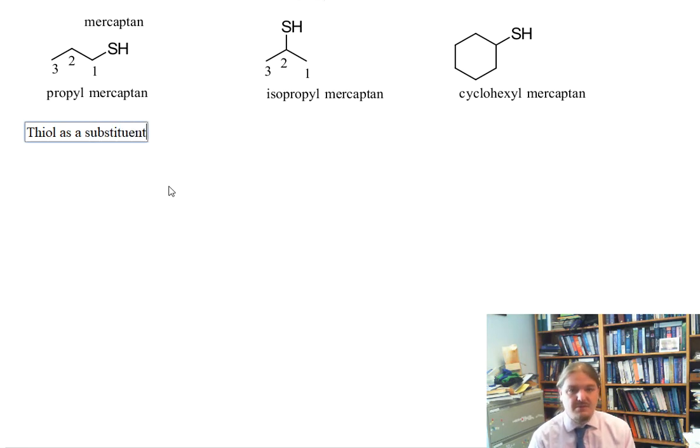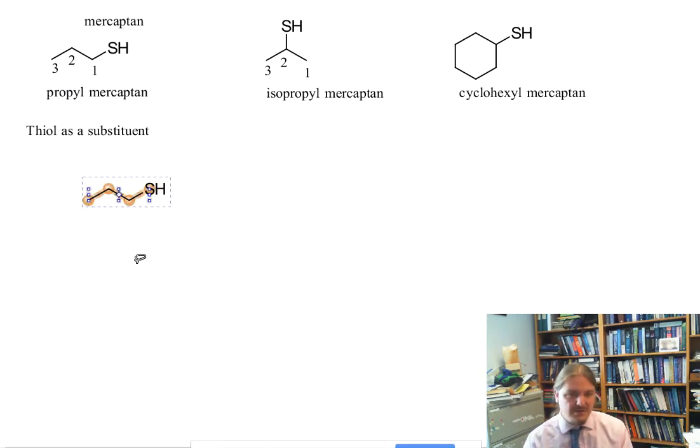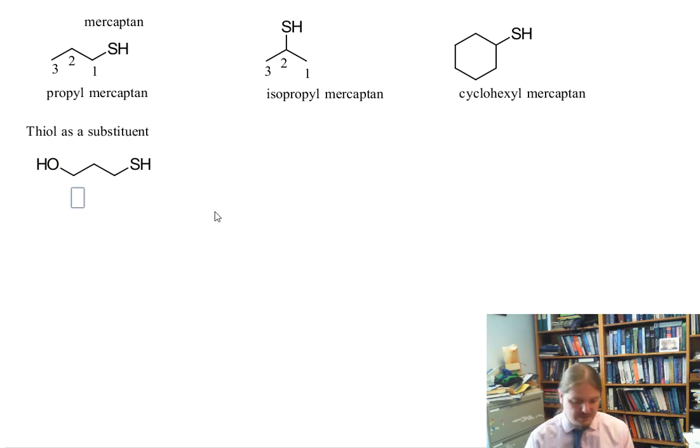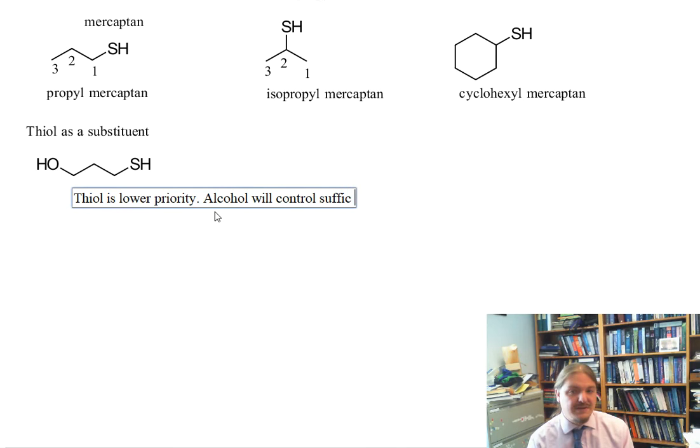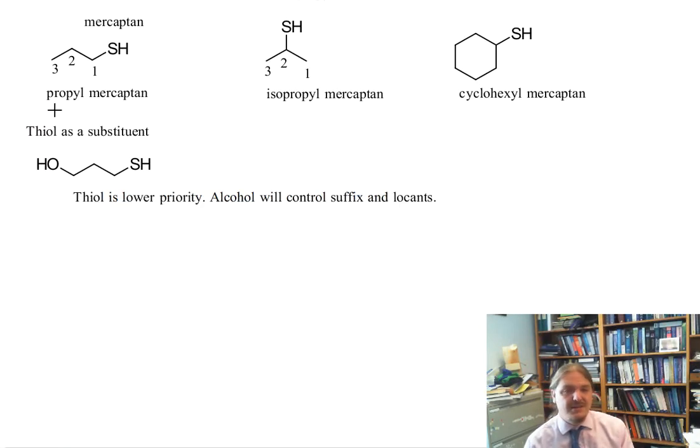Not a lot of people use this mercaptan naming method anymore, but it does serve as the base for the thiol functional group as a substituent. The thiol functional group as a substituent tends to have lower priority than other kinds of functional groups common in the structure of organic compounds. Here in this molecule that has both an alcohol and a thiol, the thiol is a lower priority functional group.